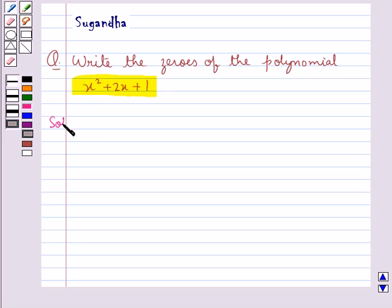Let's move on to the solution. The given polynomial is x squared plus 2x plus 1.